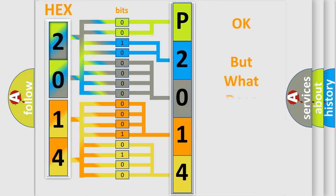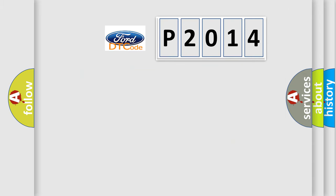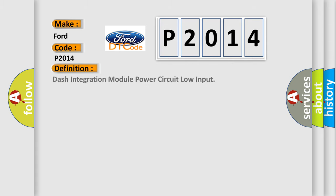The number itself does not make sense to us if we cannot assign information about what it actually expresses. So, what does the diagnostic trouble code P2014 interpret specifically for Infiniti car manufacturers? The basic definition is: Dash Integration Module power circuit low input.